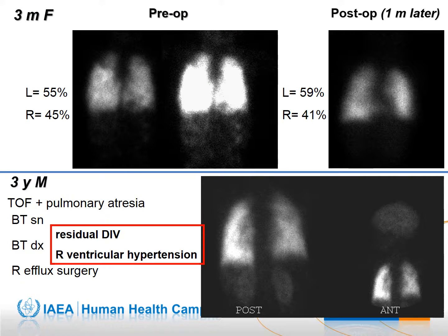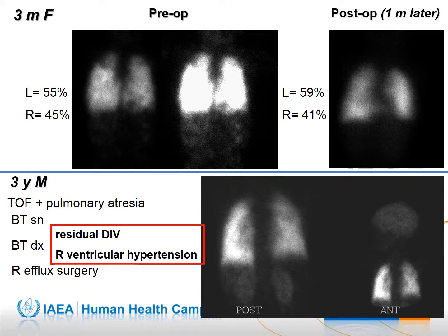Here are two examples of lung perfusion scintigraphy with significant right-to-left shunts. The first patient had a tetralogy of Fallot. The second is particularly interesting because it presents a right-to-left shunt with the presence of cerebral and renal activity and a significant right ventricular hypertension that was not affected by the increase in capillary resistance during the injection of macro-aggregates of albumin.